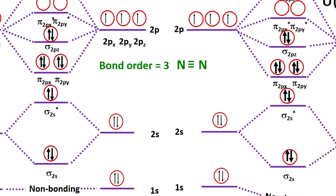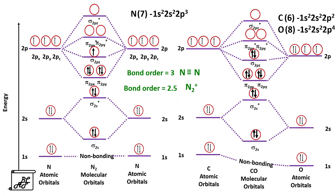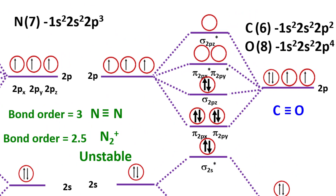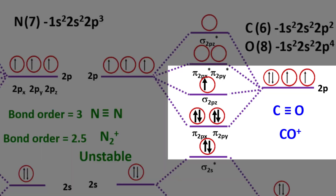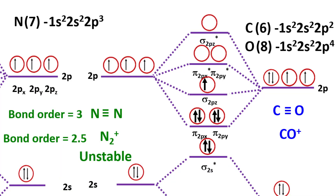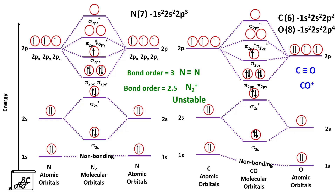In dinitrogen, the bond order is 3. If dinitrogen is ionized, one electron is removed from the highest occupied molecular orbital and the bond order becomes 2.5. As the bond order becomes fractional, it becomes unstable and quickly accepts one electron to become dinitrogen again. However, when the same case is considered for carbon monoxide, which has the same bond order, if CO is ionized to become CO⁺, the electron is removed from the sigma 2pz orbital. Experimentally, CO⁺ is found to be a stable molecule, meaning the MO diagram similar to N₂ cannot apply to CO.